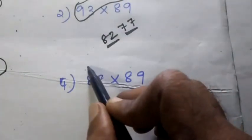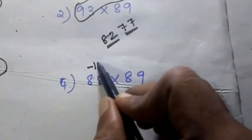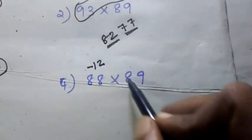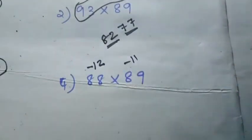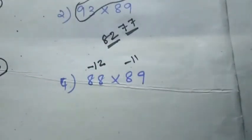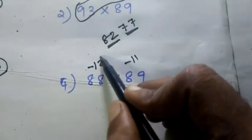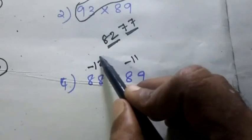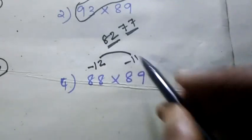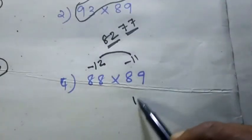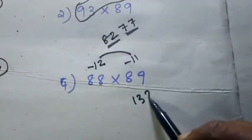Here the 100 is less than 12. Here the 11 is less than 11. So first, multiply: 12 into 11 is 132.